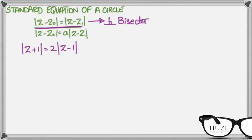But this over here is not a perpendicular bisector loci, but instead it's an equation for a circle. Now, let's say we have an example, z plus 1 in a modulus equals to 2, z minus 1.